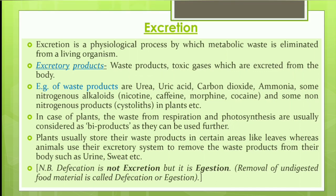The next feature is excretion. Excretion is a physiological process by which metabolic waste is eliminated from a living organism. The excretory products are waste products and toxic gases excreted from the body. Examples include urea, uric acid, carbon dioxide, ammonia, and some nitrogenous alkaloids in plants like nicotine, caffeine, morphine, and cocaine.